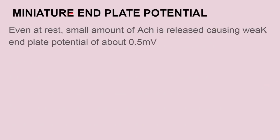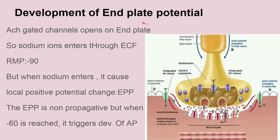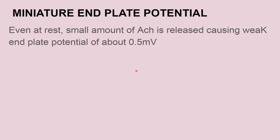Now next is the miniature end plate potential. The end plate potential develops when the muscle needs contraction and impulses are generated. But even at rest, a small amount of acetylcholine is released from the presynaptic membrane, which causes a weak end plate potential of about 0.5 millivolts. This 0.5 mV end plate potential doesn't cause any kind of contraction but is formed because of the small amount of ACh release from the presynaptic membrane. This is known as the miniature end plate potential.